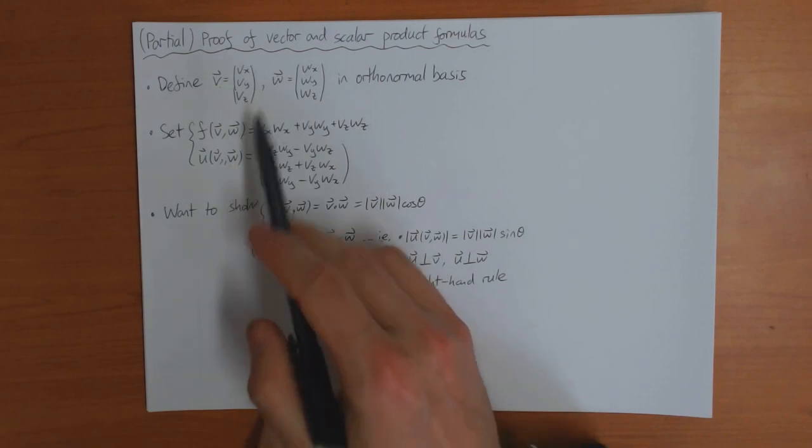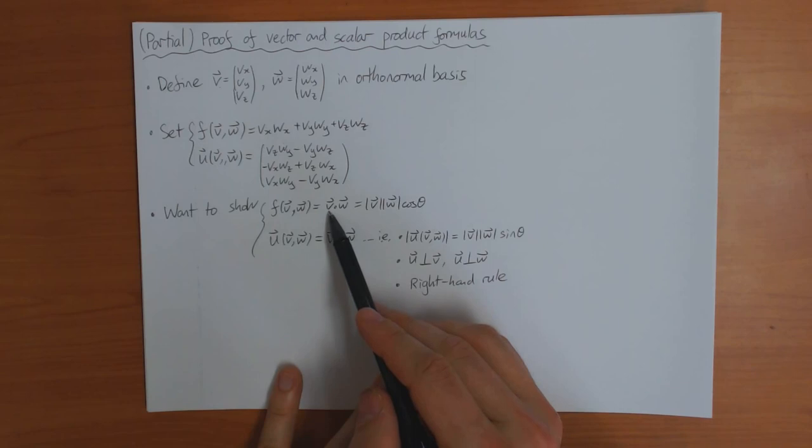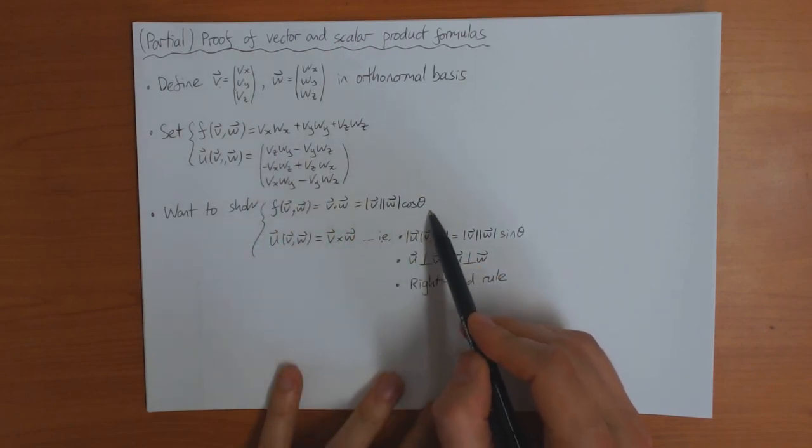Then I want to prove now that this function here is the same as the scalar product. In other words, it's equal to length of v, length of w, cos theta.